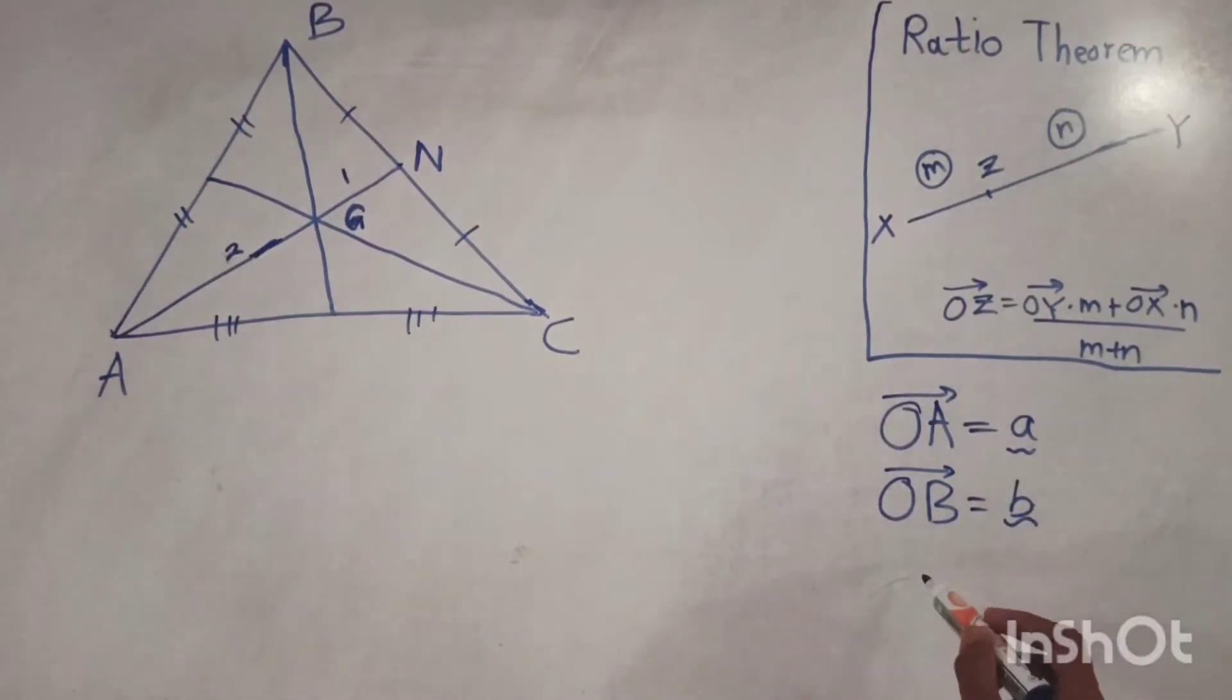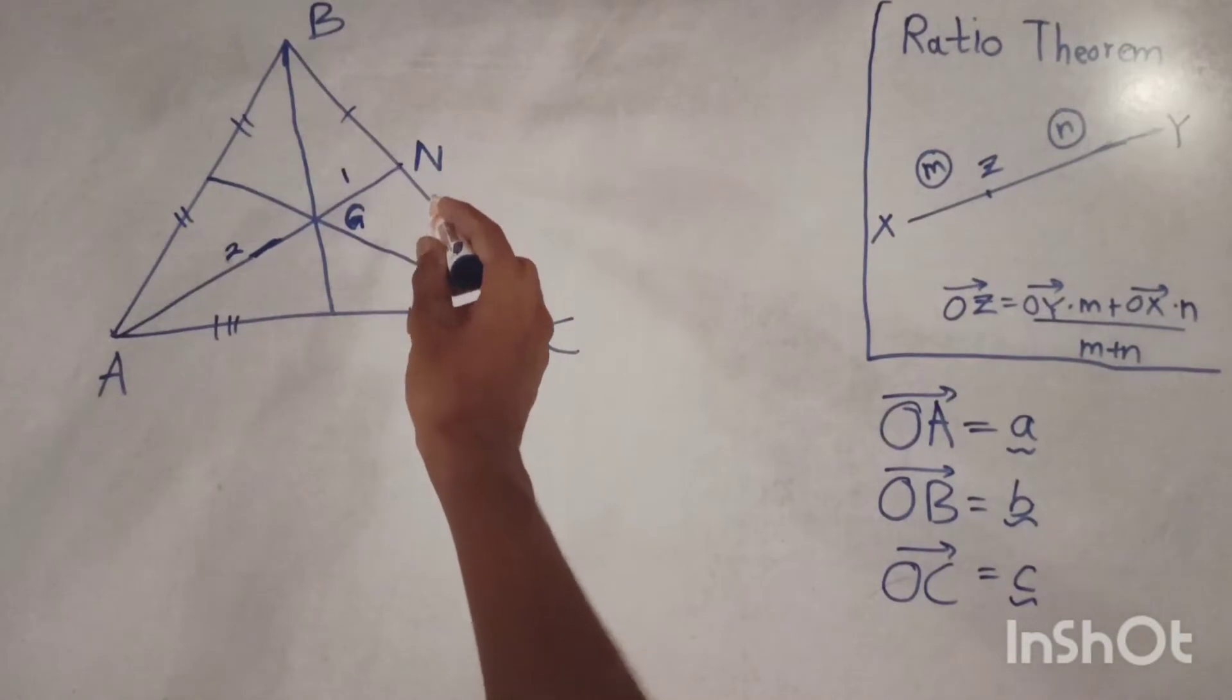We can write vector OC as simple c. Now we can write the position vector of capital N, point N.